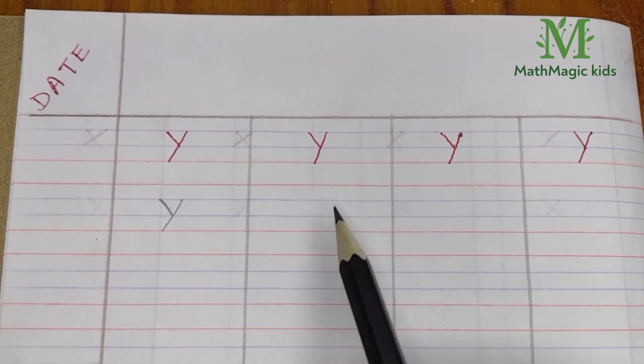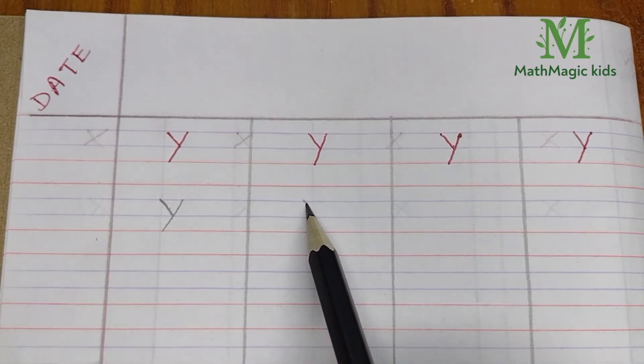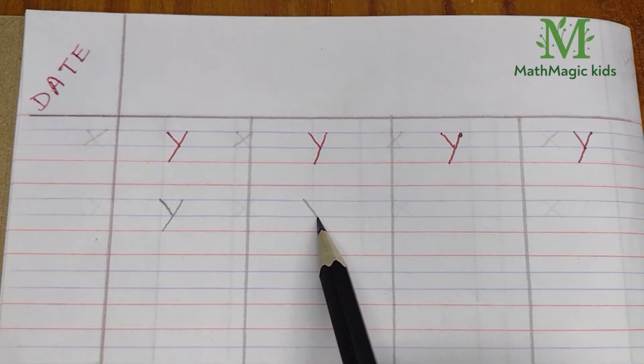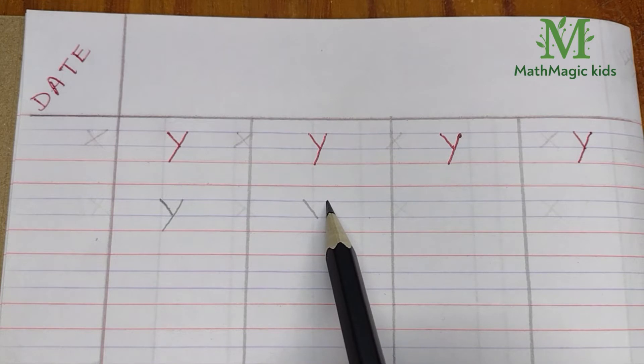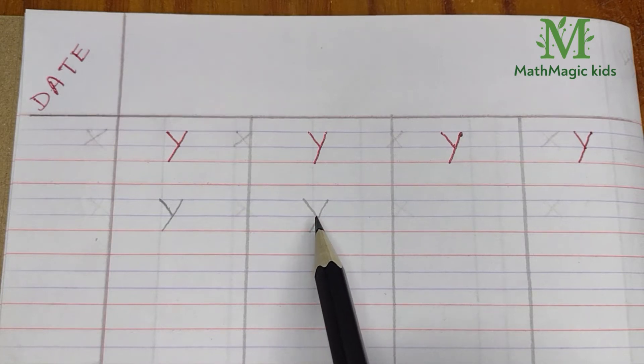Let's write again. First draw a slanting line from 1st blue line till 2nd blue line. Now draw a long slanting line from 1st blue line till 2nd red line in such a way that it will touch the 1st slanting line.